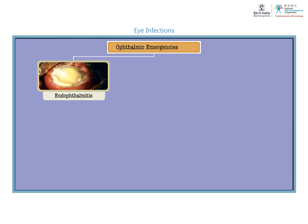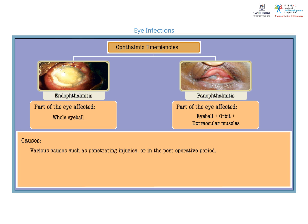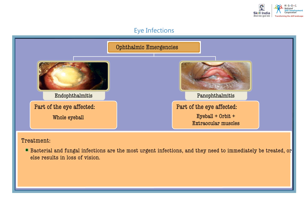Ophthalmic emergencies are of two types: endophthalmitis, when the whole eyeball is affected, and panophthalmitis, when the eyeball with orbit and the extraocular muscles are affected. The main causes are penetrating injuries or post-operative injuries. Treatment depends on the cause and severity of the injury. Bacterial and fungal infections are the most urgent and need to be treated immediately, or else there is a result in loss of vision.